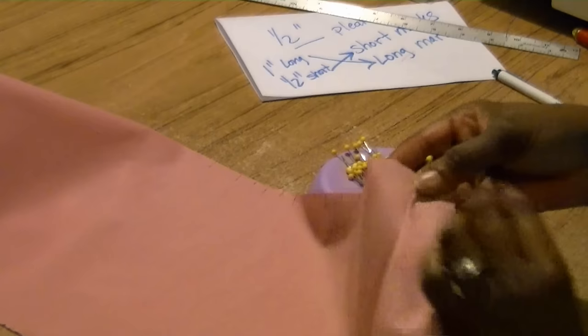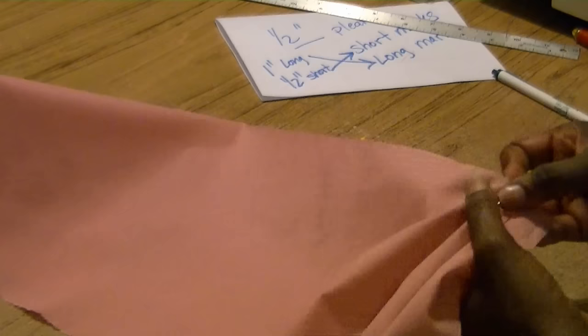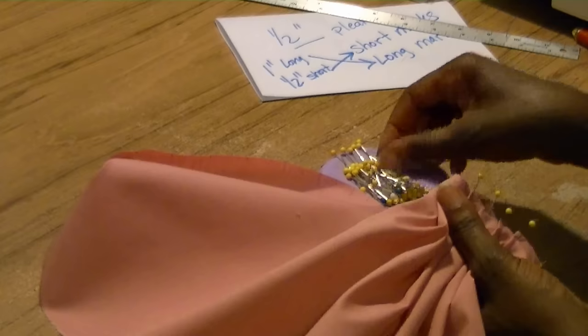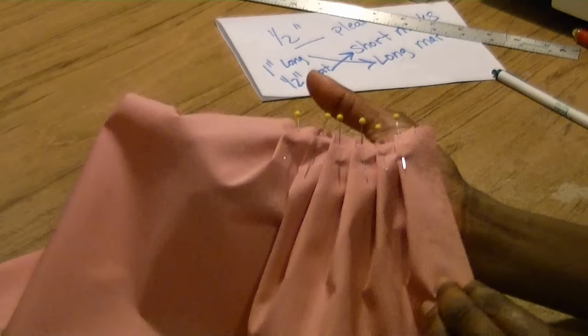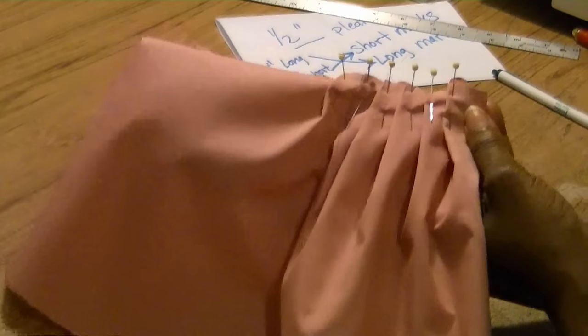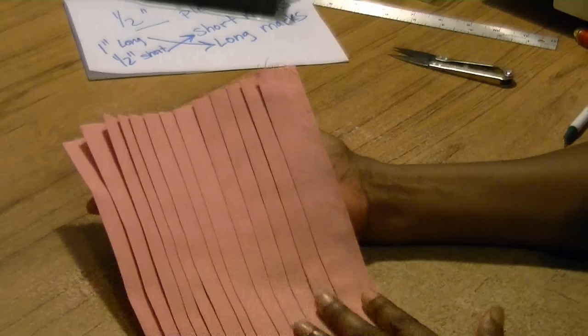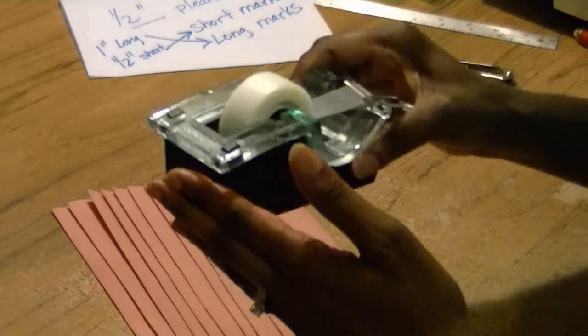You'll just continue this process all the way across till you come to the end of your fabric. This process can also be done at the ironing board, and I'm going to go ahead and press my pleats down.